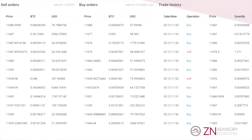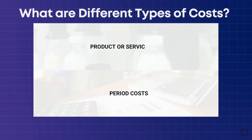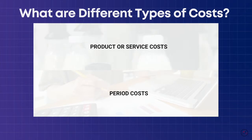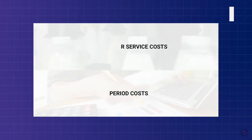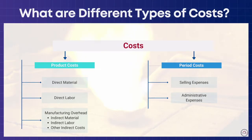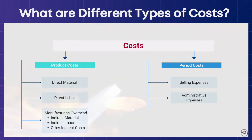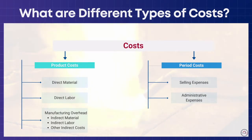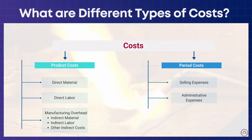At the highest level, all organizations have two types of costs from a reporting perspective: product or service costs, and period costs. Product or service costs are those necessary to create a product or service, including costs directly associated to a product or service such as direct labor or material. Period costs, on the other hand, are not incurred to create a product or service and therefore cannot be assigned to them. These are necessary costs to run an organization—for example, selling and administration expenses.